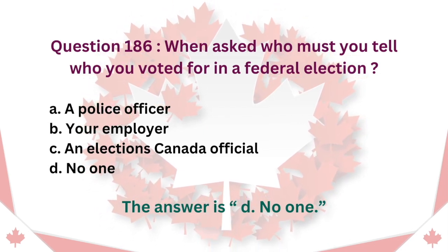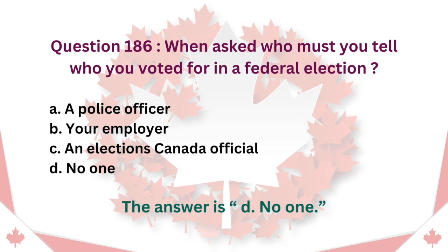Question 186: When asked, who must you tell who you voted for in a federal election? A. A police officer. B. Your employer. C. An Elections Canada official. D. No one. The answer is D. No one.